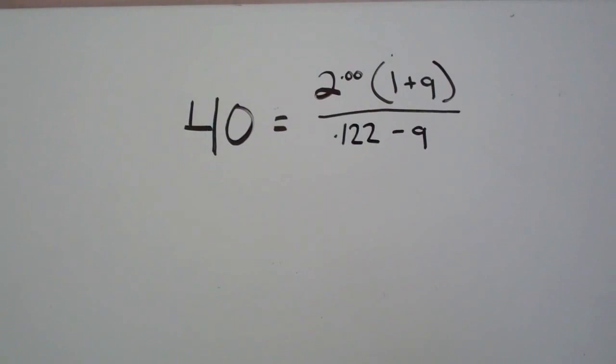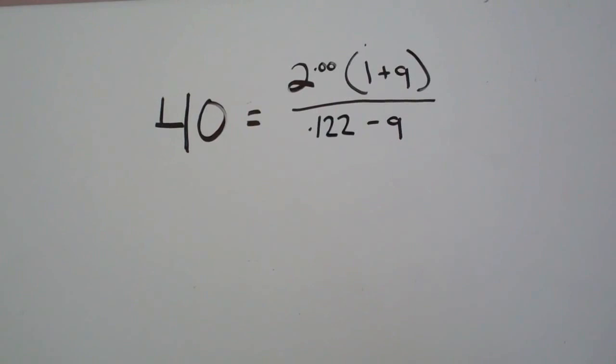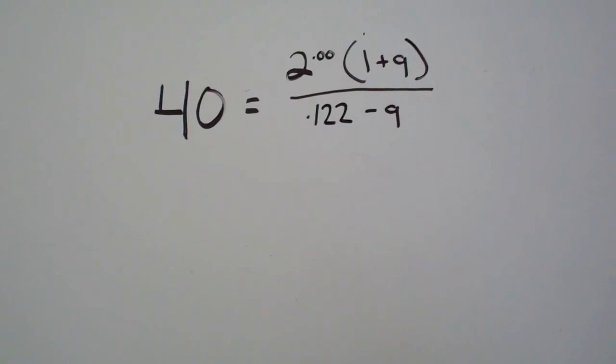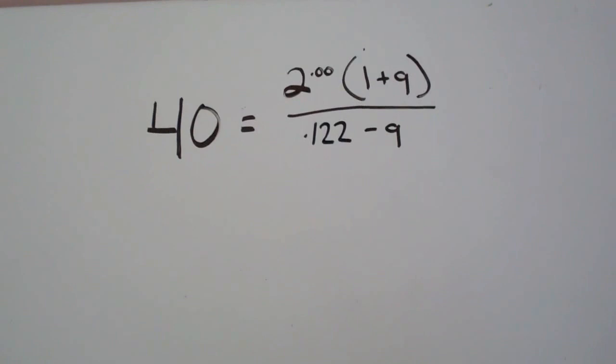So it says the value of the stock is $40 and you're using the discounted dividend model. So the dividend in year zero was $2. You're going to multiply that by 1 plus G and your required rate of return on equity is 12.2 and you subtract G. So that's the Gordon Growth Model there on the right hand side. And you're saying the value is 40, so what's the implied growth rate?